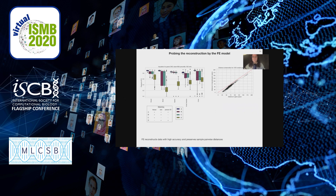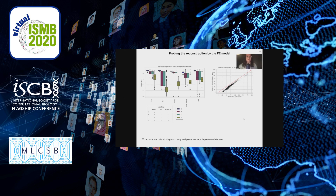Another thing we looked at is the preservation of distances in original and imputed space. For a random sample of 1,500 pairs of patients, the pairwise distances are conserved. Our conclusion is that the factorized embeddings model reconstructs data with high accuracy and preserves sample pairwise distances.